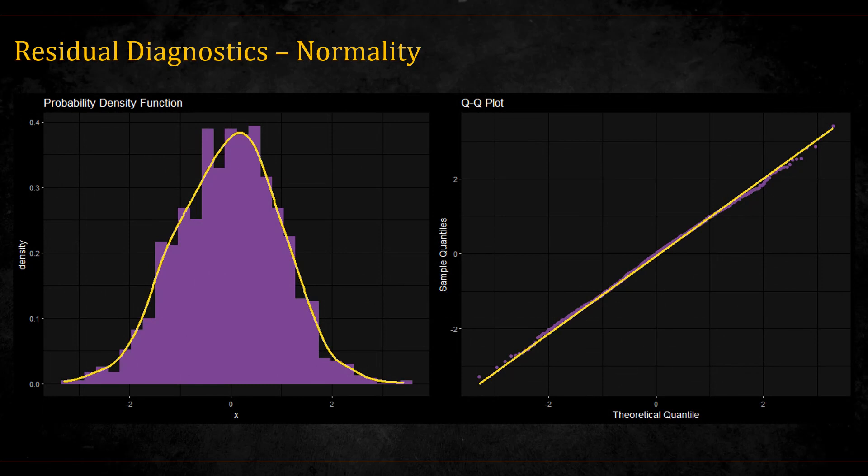Here is an example of a normal distributed data. On the left, you can see a histogram and KDE graph. On the right, you can see the corresponding QQ plot. You can see that the data points in purple are arranged almost perfectly on the straight line.